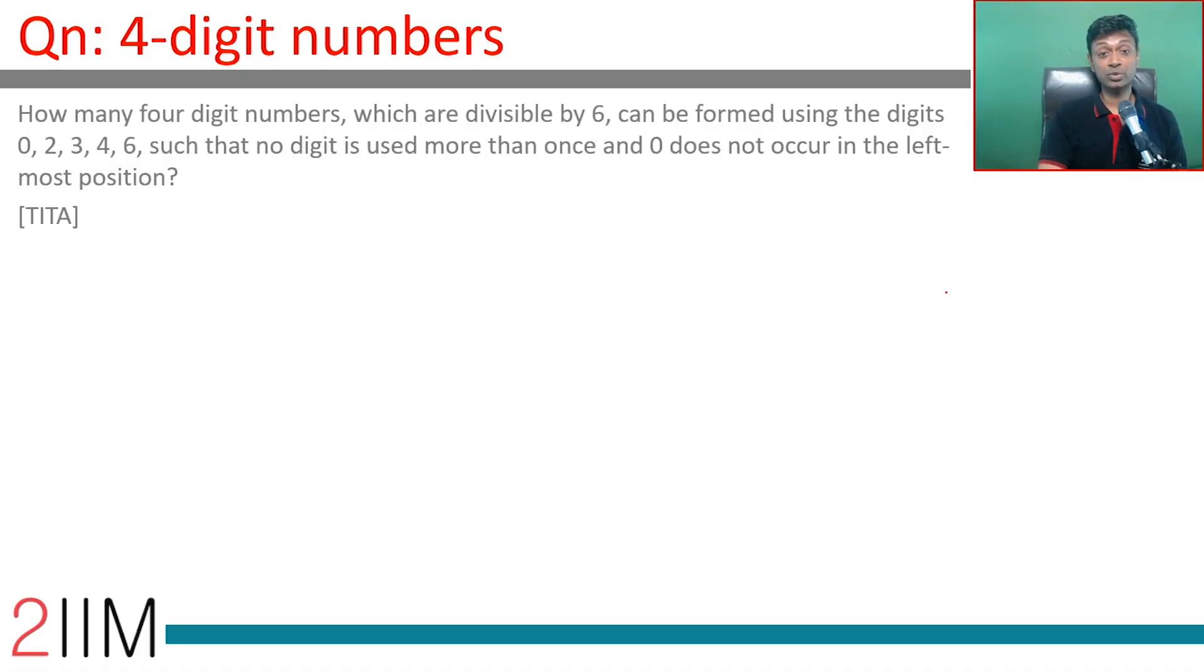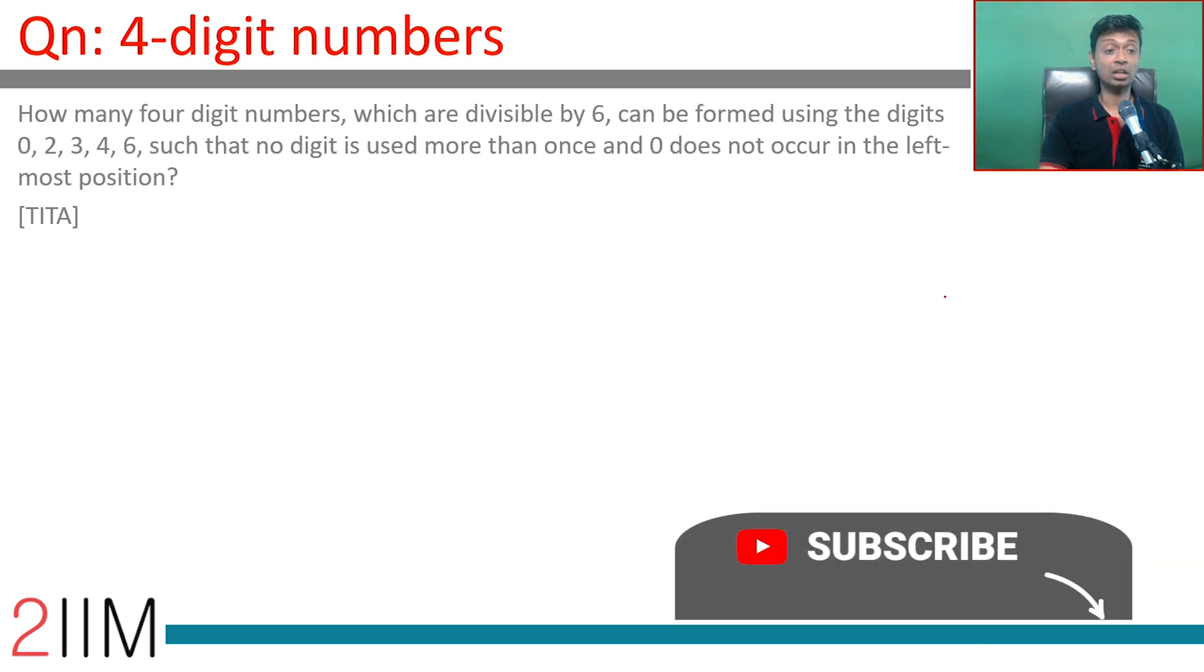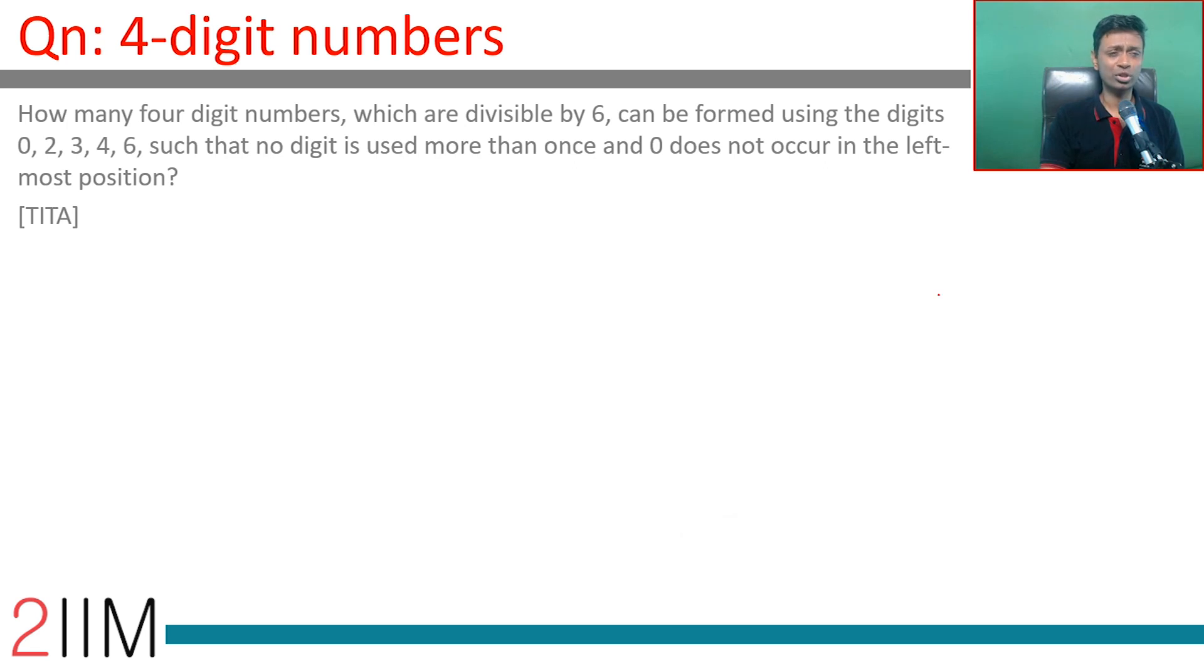How many 4-digit numbers which are divisible by 6 can be formed using the digits 0, 2, 3, 4, 6 such that no digit is used more than once and 0 does not occur in the leftmost position? We are looking at 4-digit numbers. So there are 5 digits here. Out of these 5, one should be left out. It should be a multiple of 6. That means it should be a multiple of 2 and a multiple of 3. So it should be an even number that's also a multiple of 3.